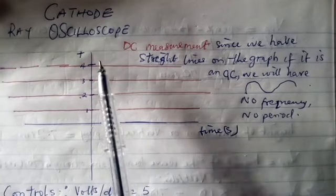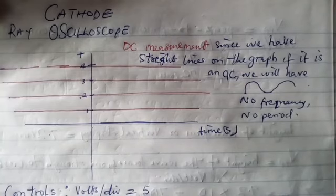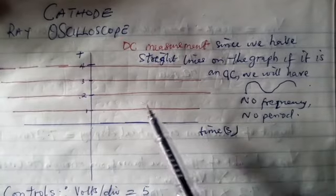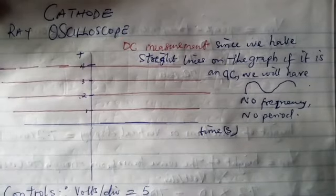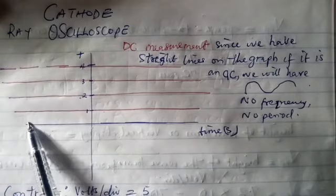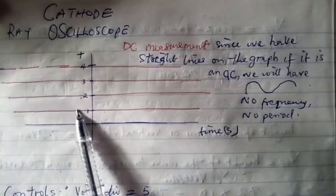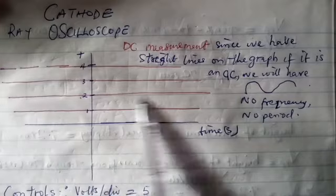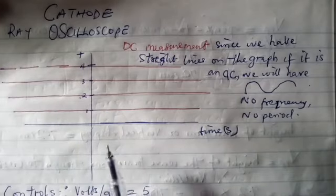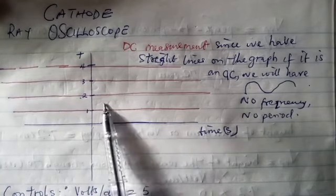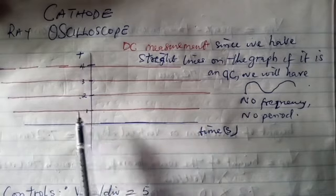The cathode ray oscilloscope can also measure a DC voltage. Before we start the use of cathode ray, we do some settings. If you see that the graph is not an oscillation — in the sense that it didn't go like a sinusoidal wave — rather it is a straight line, that simply means that this cathode ray showing this kind of form on the screen is used for measuring DC direct current.